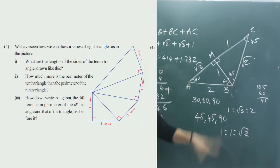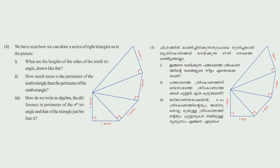Next question: we have seen how to draw a series of right triangles as in the picture. First sub-question: what are the lengths of the sides of the 10th triangle? Second: how much more is the perimeter of the 10th triangle than the 9th? Third: how do we write algebraically the difference in perimeter of the 10th triangle and the one just before it?